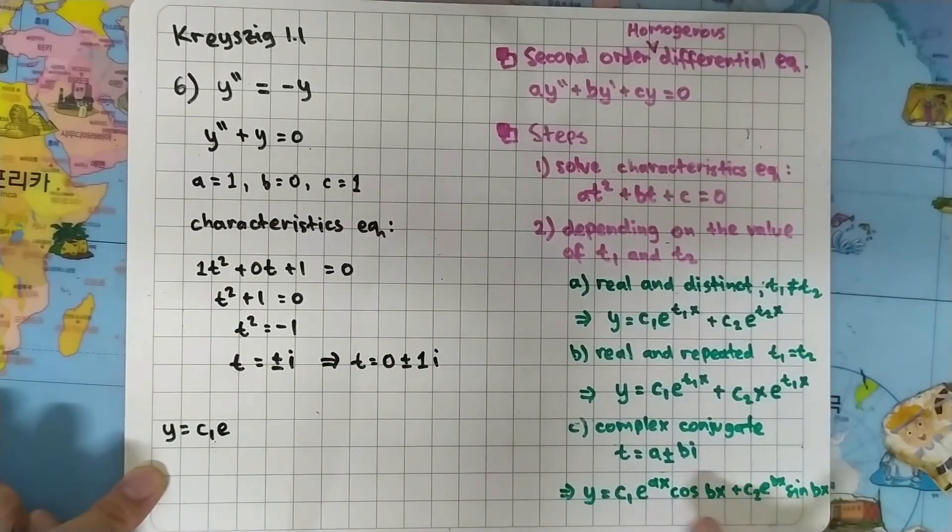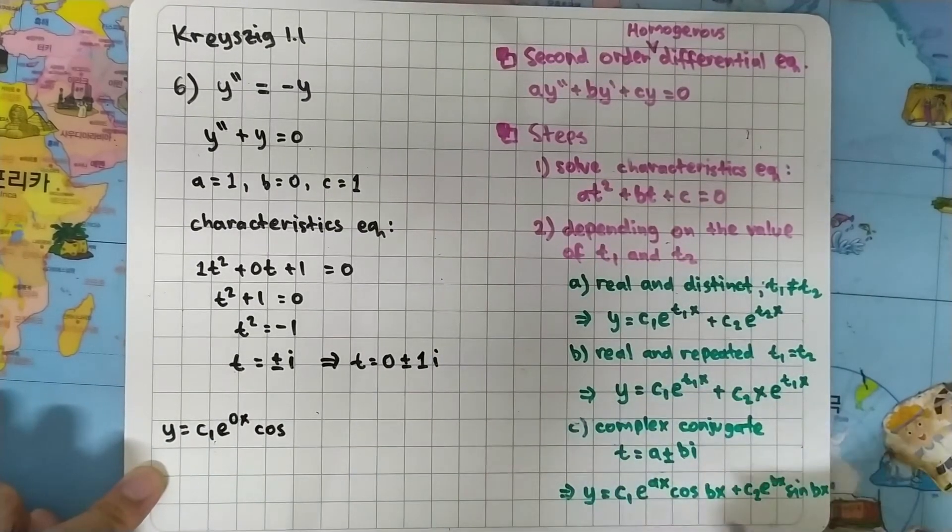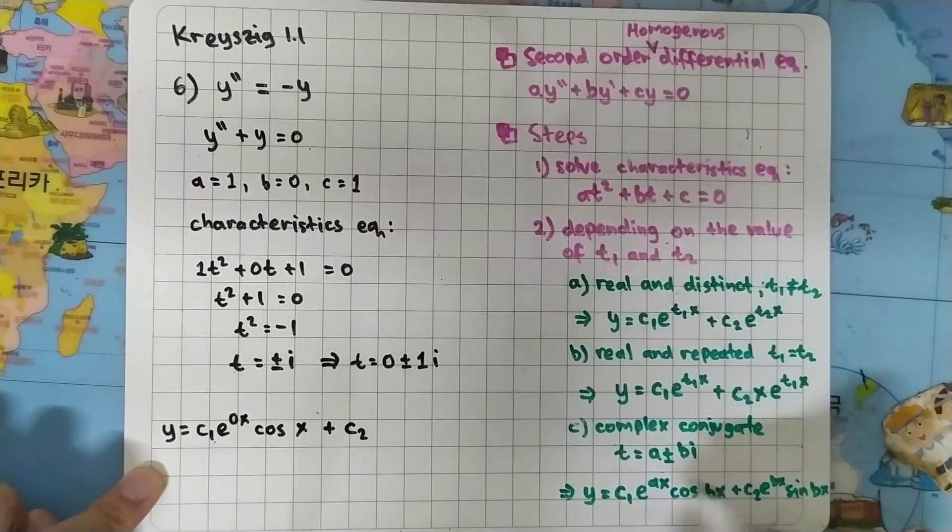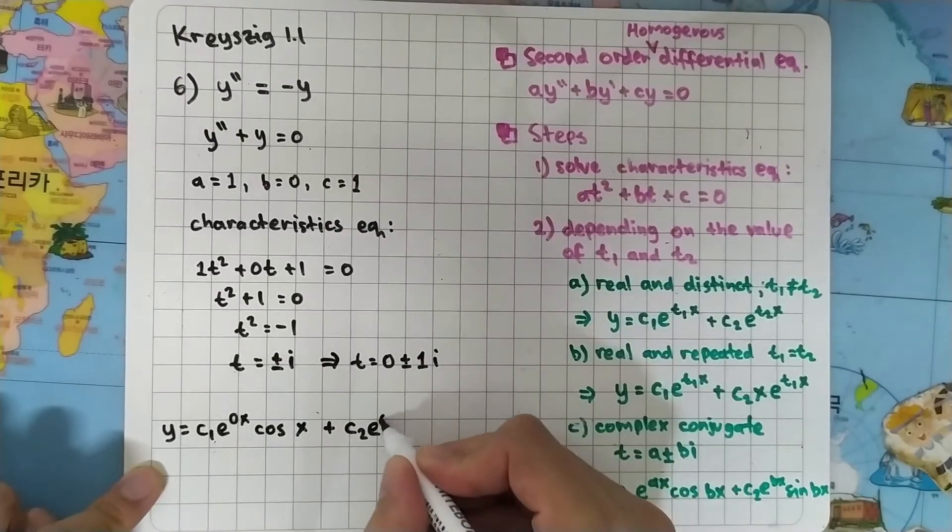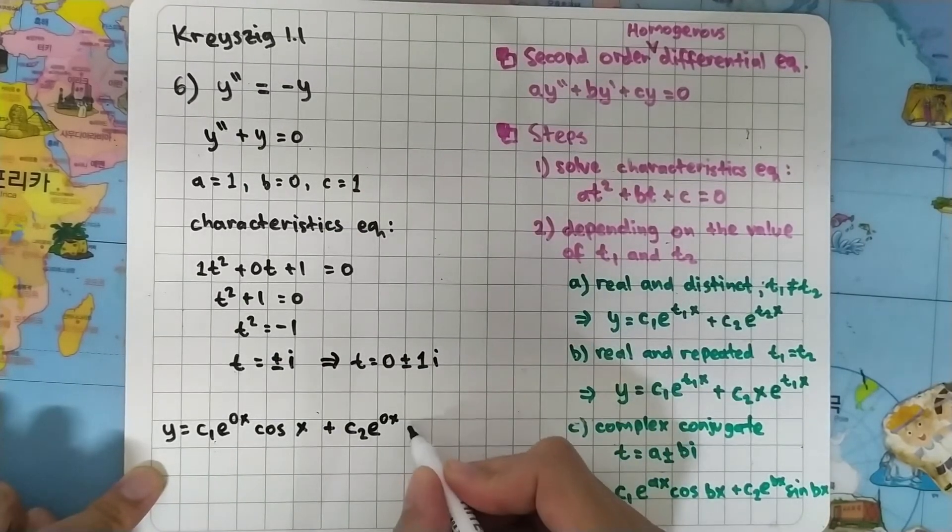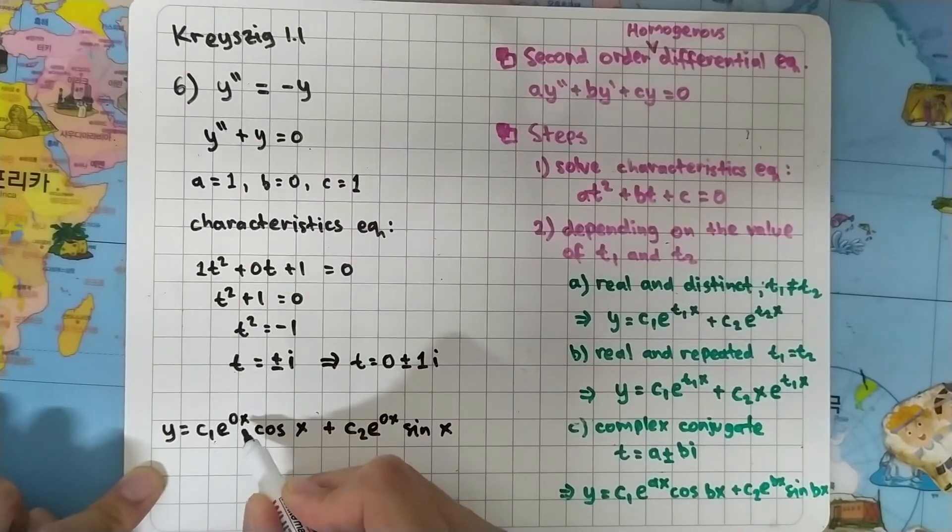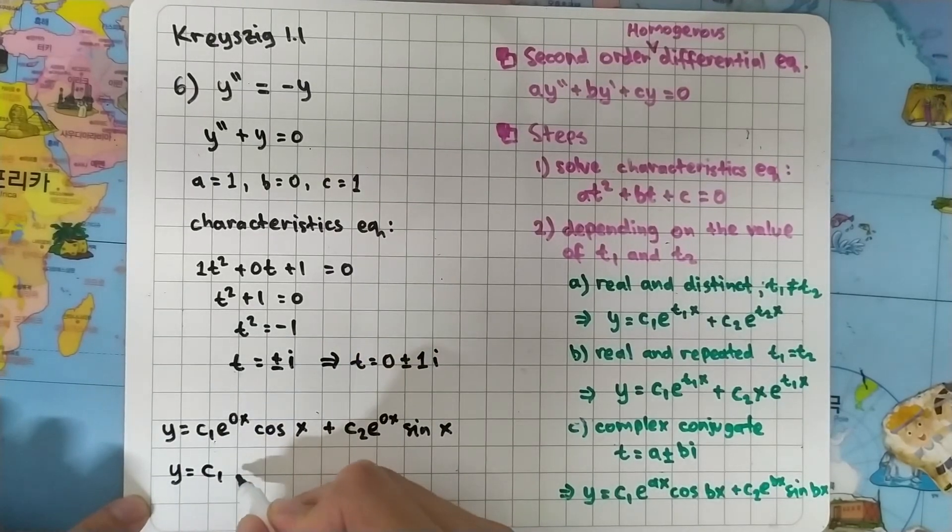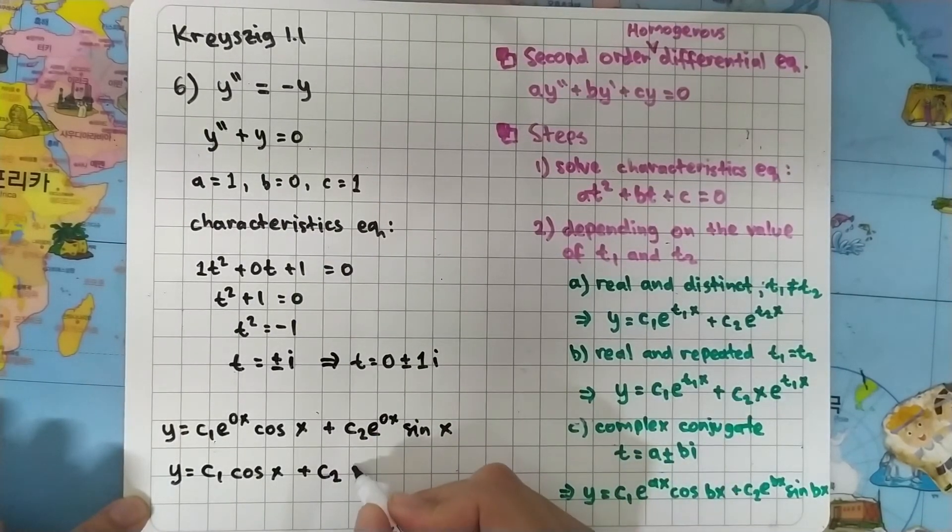So cos x plus C2 times e to the zero, where A is zero, times sin B is one times x. E to the zero times x is e to the zero which is one. So we can simplify this as C1 cos x plus C2 sin x.